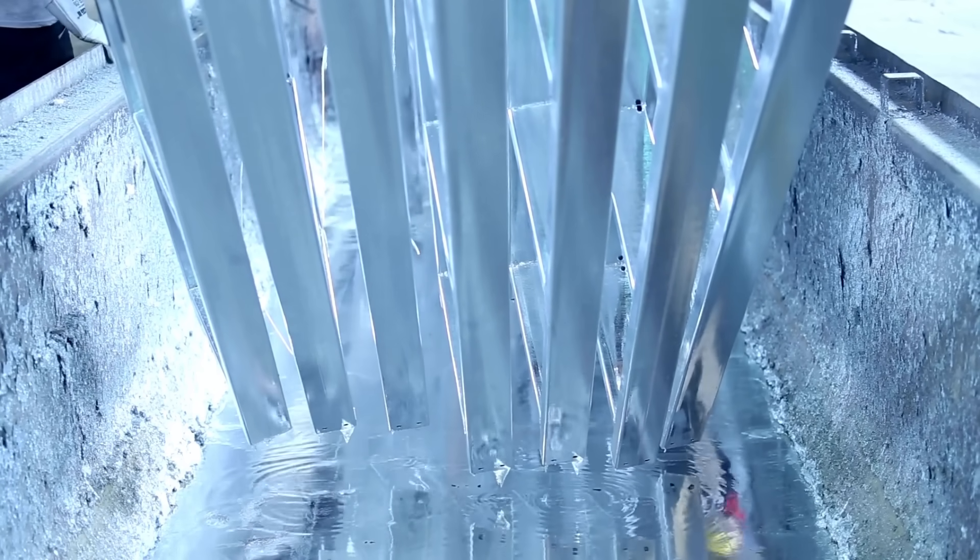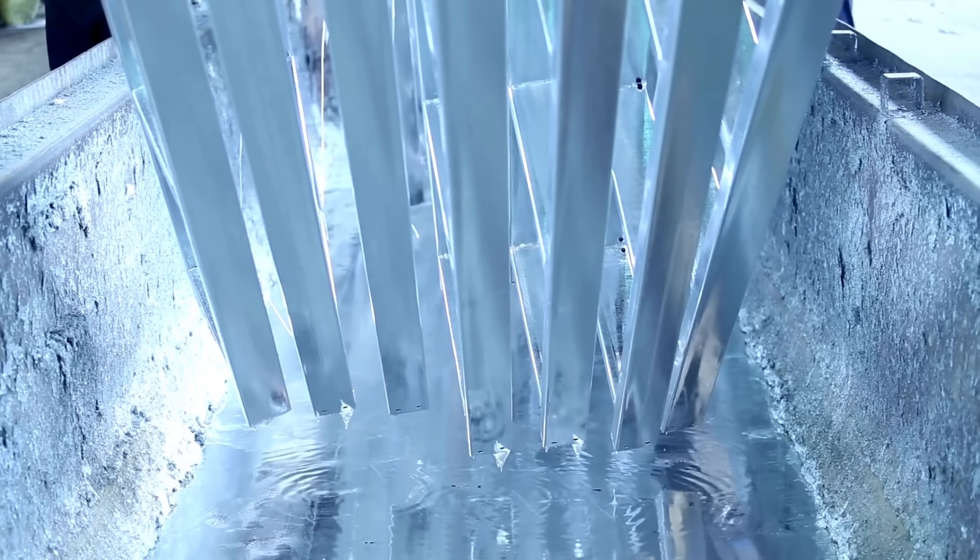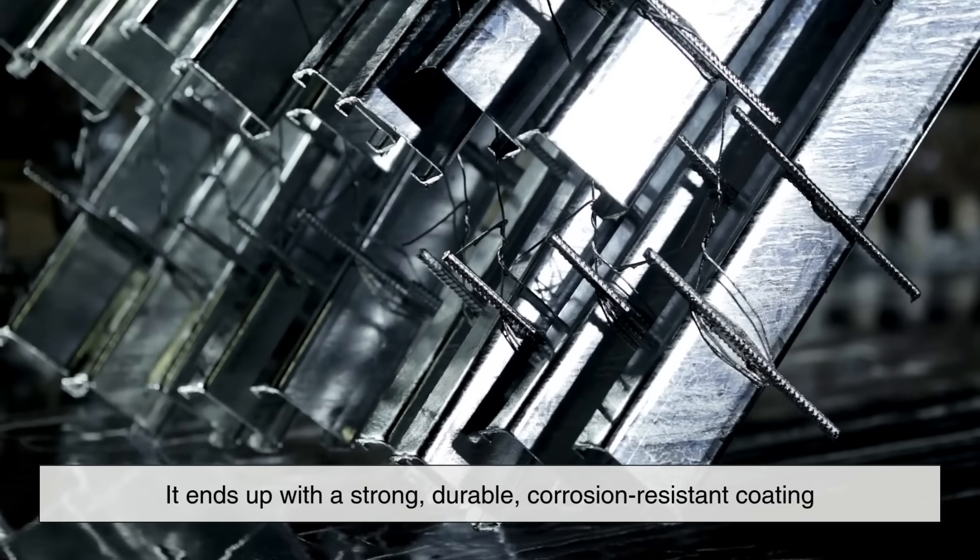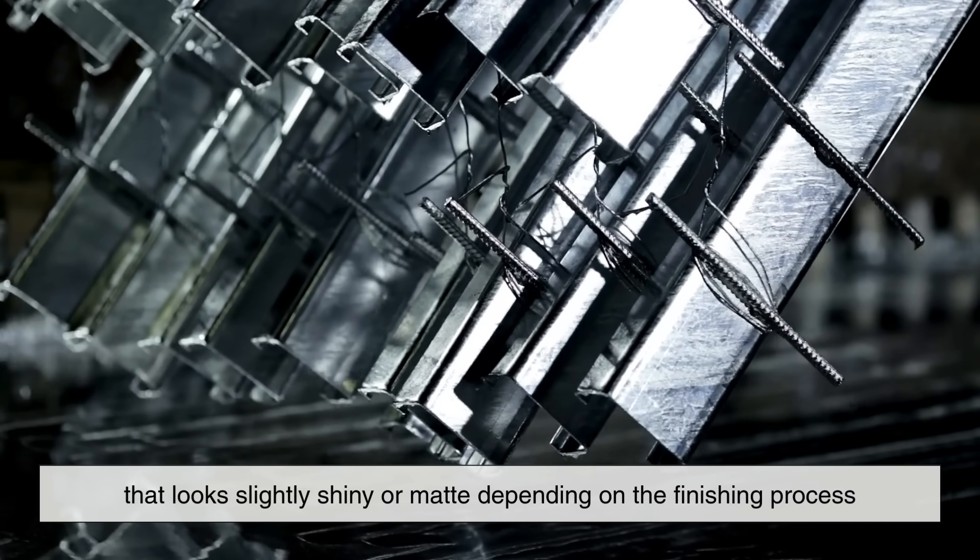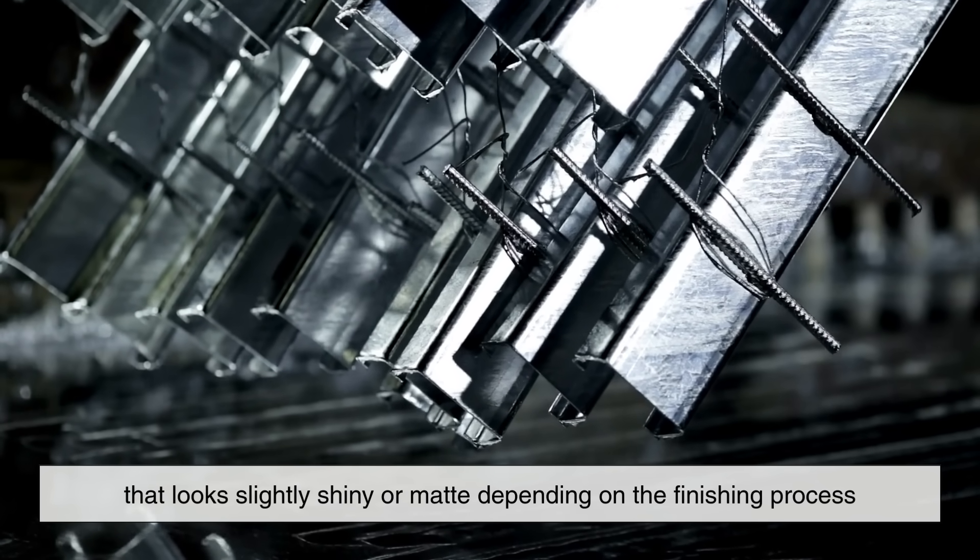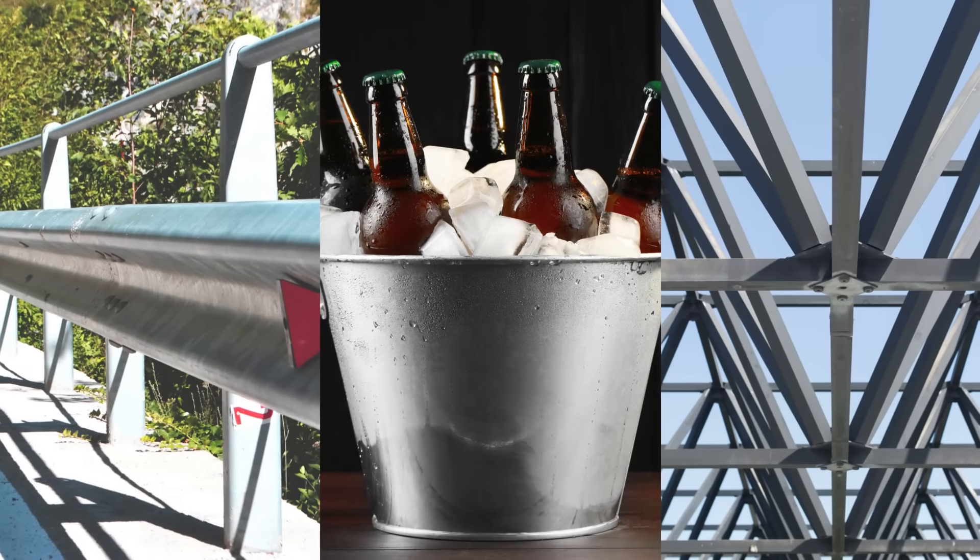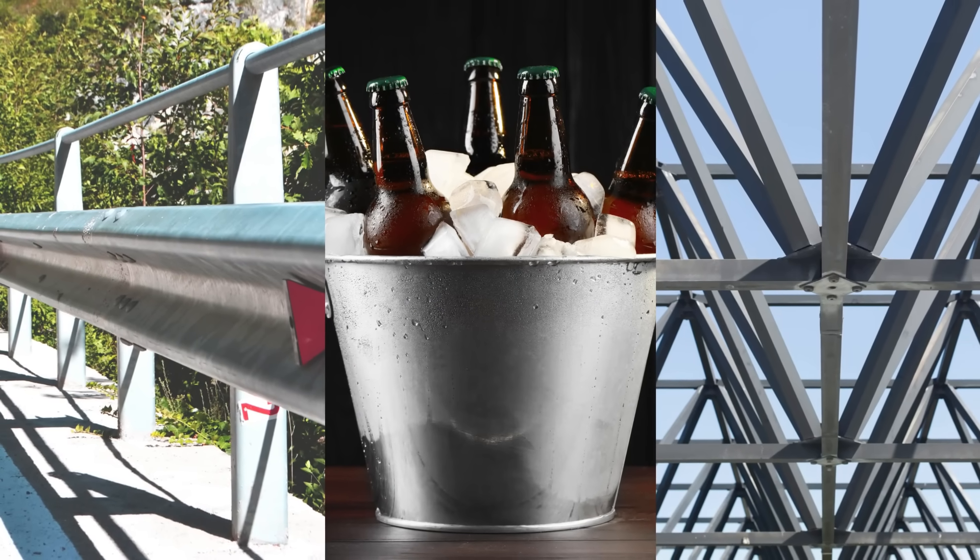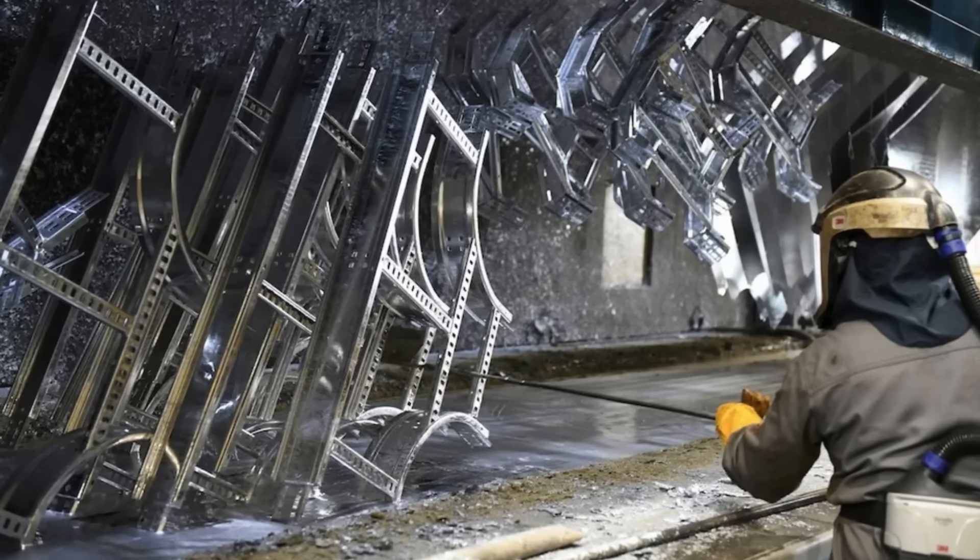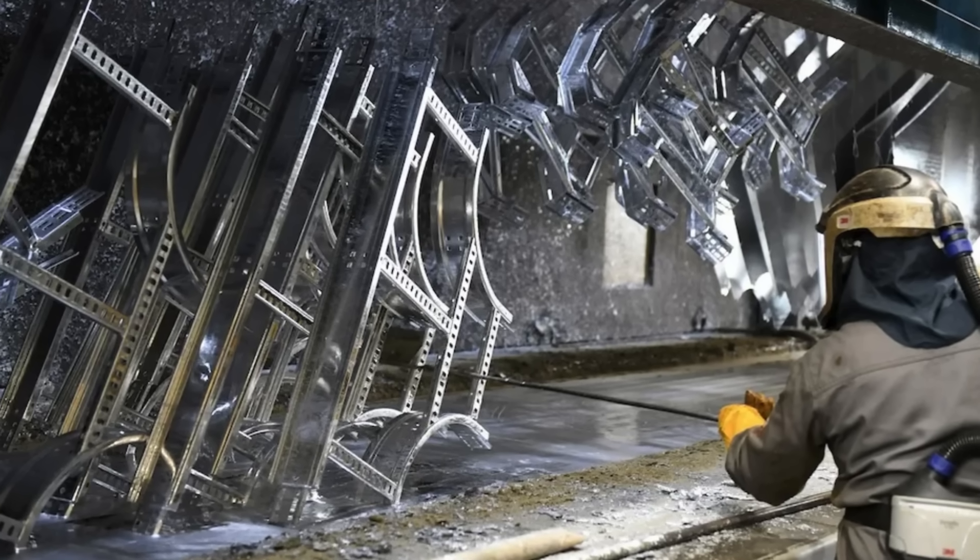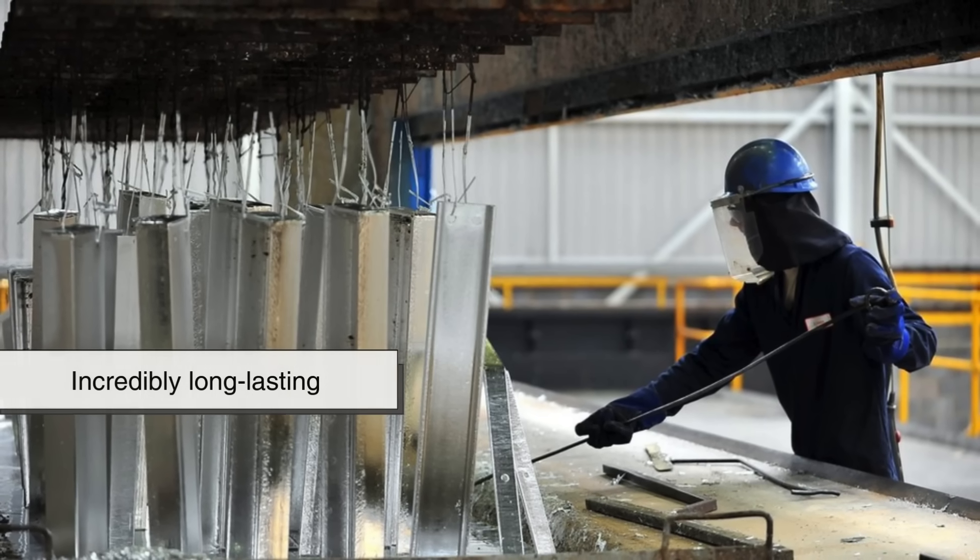As the steel is submerged, the zinc reacts chemically with the surface to form a tightly bonded alloy layer. When the metal is pulled out and cooled, it ends up with a strong, durable, corrosion-resistant coating that looks slightly shiny or matte depending on the finishing process. Hot-dip galvanizing is extremely popular because the coating becomes part of the metal itself, not just a surface layer, making it incredibly long-lasting.